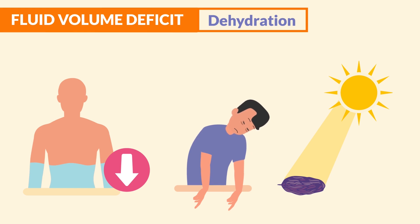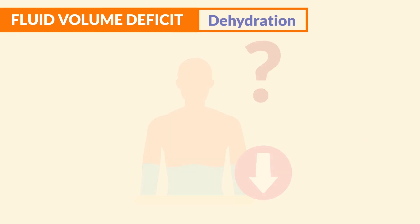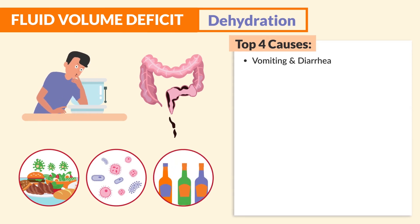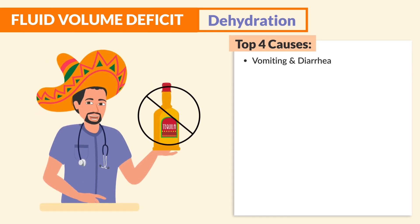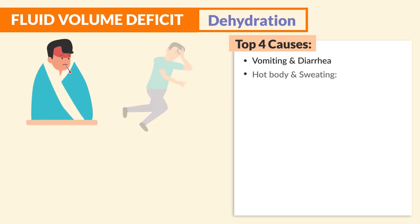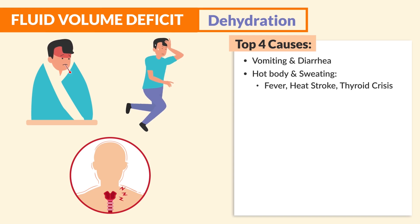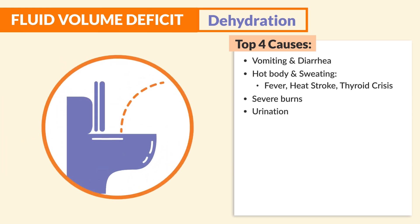Now, why does this happen? The top four causes are: vomiting and diarrhea — like from food poisoning, infection, or too much alcohol. Hot body and sweating also releases fluid, including from fever, heat stroke, and even thyroid crisis. Severe burns also put the patient most at risk for fluid volume deficit, since they lose a lot of fluid due to blister formation on the skin.